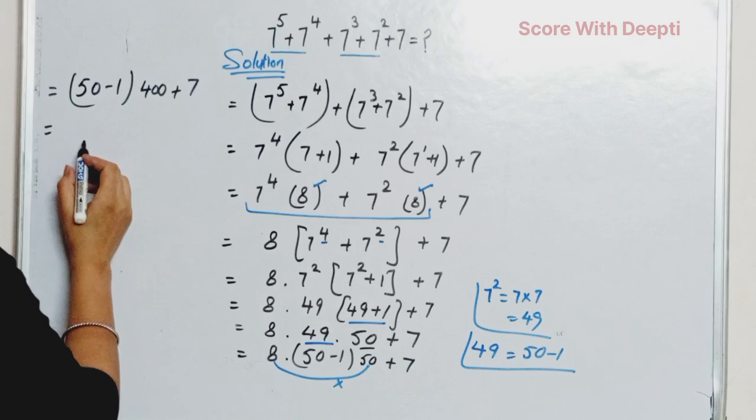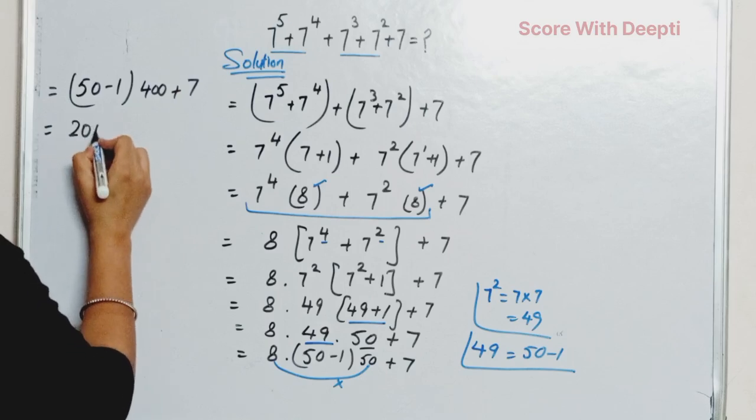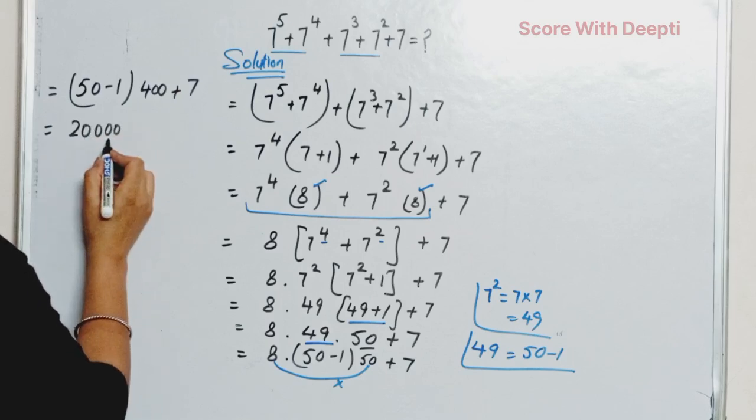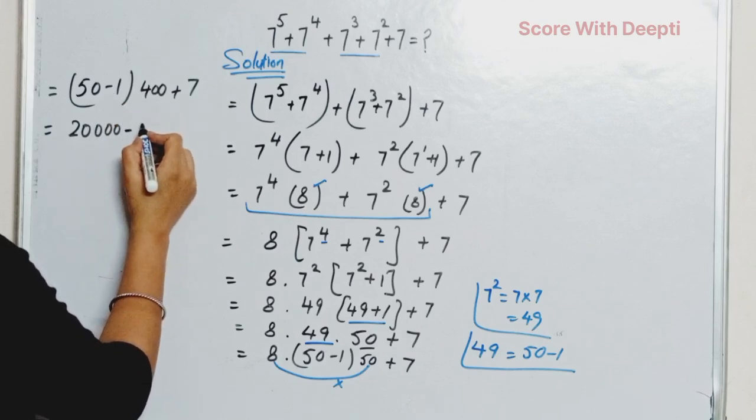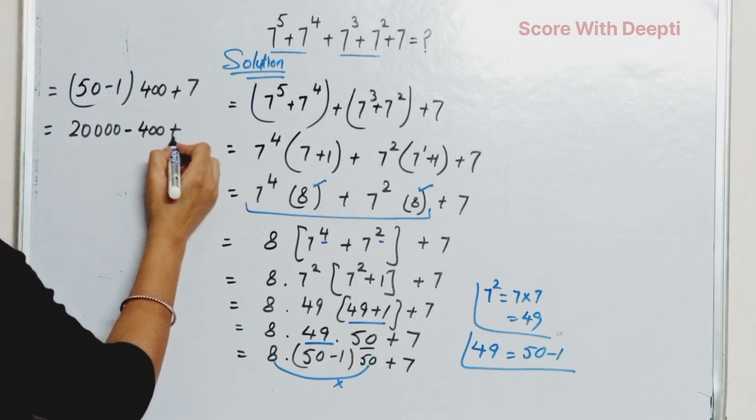Next, we multiply 400 with 50 and get 20,000 minus 400 * 1, we get 400 plus 7.